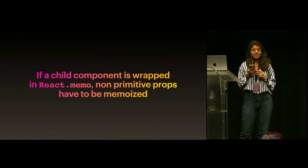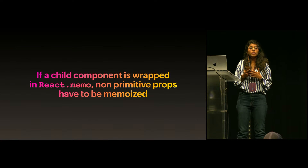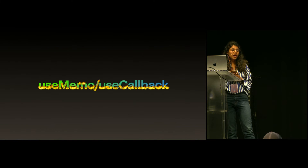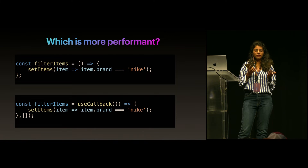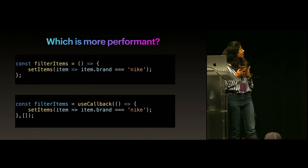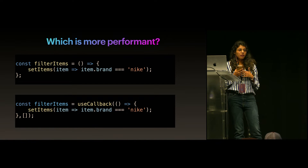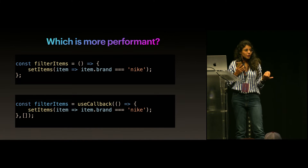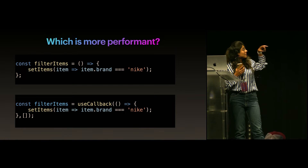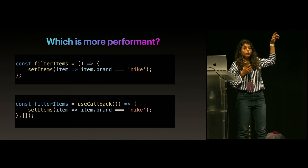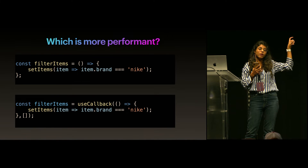So if a child component is wrapped in React.memo, non-primitive props have to be memoized. Now let's talk about useMemo and useCallback. Which one is more performant — a plain filterItems call, or one wrapped inside useCallback? The second version is actually doing more computations because it calls the function AND does additional computations for useCallback. The same applies to useMemo.